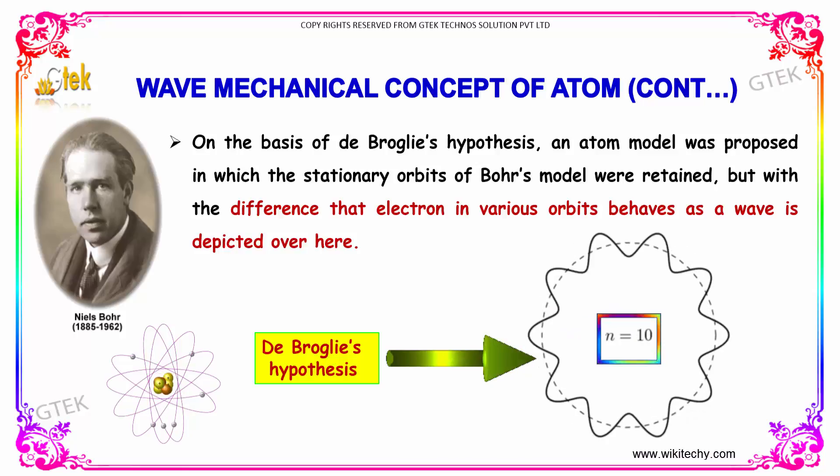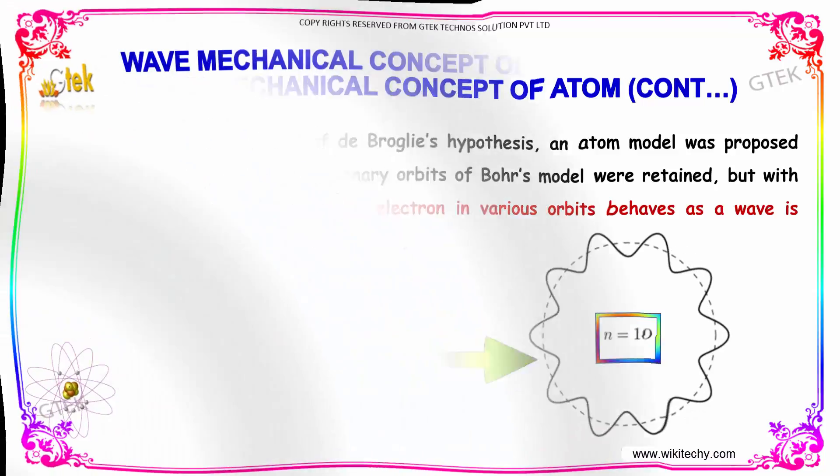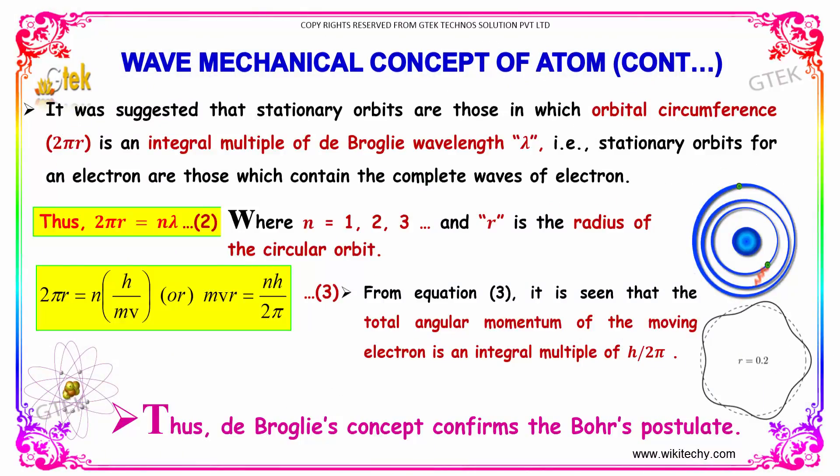So you are able to see the orbits here. Let's talk about the wave mechanical concept of atom. It was suggested that stationary orbits are those in which orbital circumference 2πr is an integral multiple of de Broglie wavelength λ.